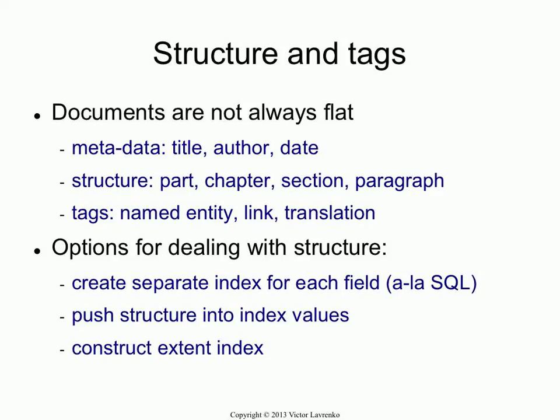What else could you do? You could push the structure into index values. What do I mean by that? That means that if you have an author William Shakespeare, instead of having a token 'William' and a token 'Shakespeare,' you introduce a token 'author_William,' 'author_Shakespeare' as a single term. So that's one way to push structure into the values themselves. And then if you did that, you wouldn't actually need a special index of any kind. That's very inflexible, though.